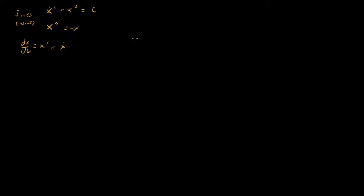Now let's look at what happens with Jacobi elliptic functions. I'll start by reminding us of two important relationships: sn² + cn² = 1, and dn² + k² sn² = 1.